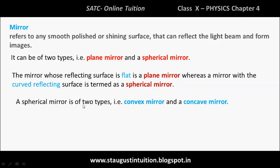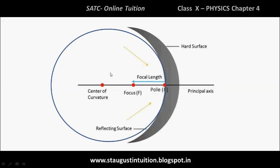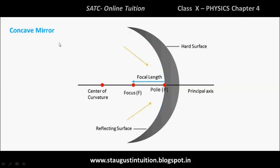A spherical mirror is of two types: convex and concave. The inside surface of a sphere forms one type, and the outside forms another. Both are referred to as spherical mirrors.